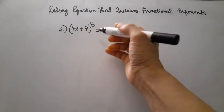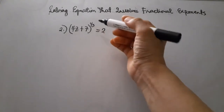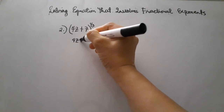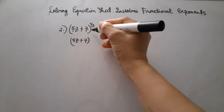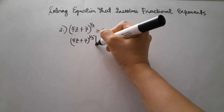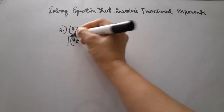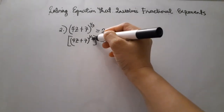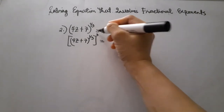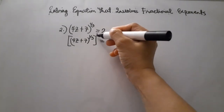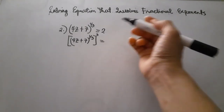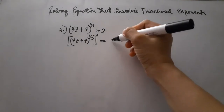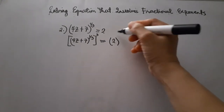We will again use the reciprocal. We raise both sides by the reciprocal of 1 third in order to cancel the exponent. The reciprocal of 1 third is 3, or 3 over 1. So we raise both sides by 3: the right side becomes 2 raised to the power of 3.